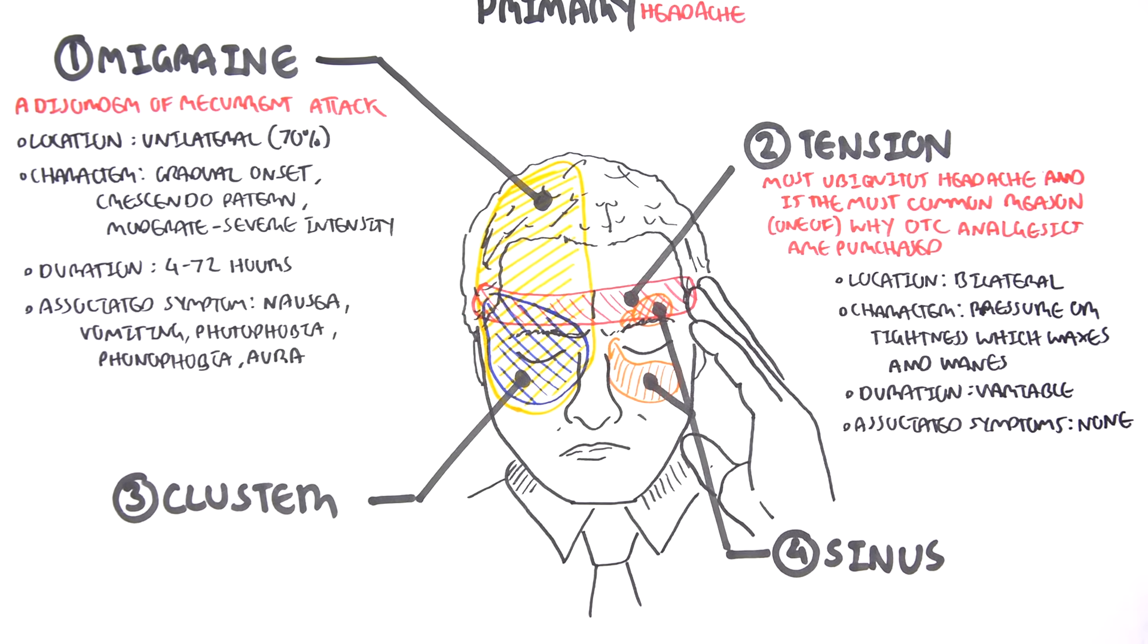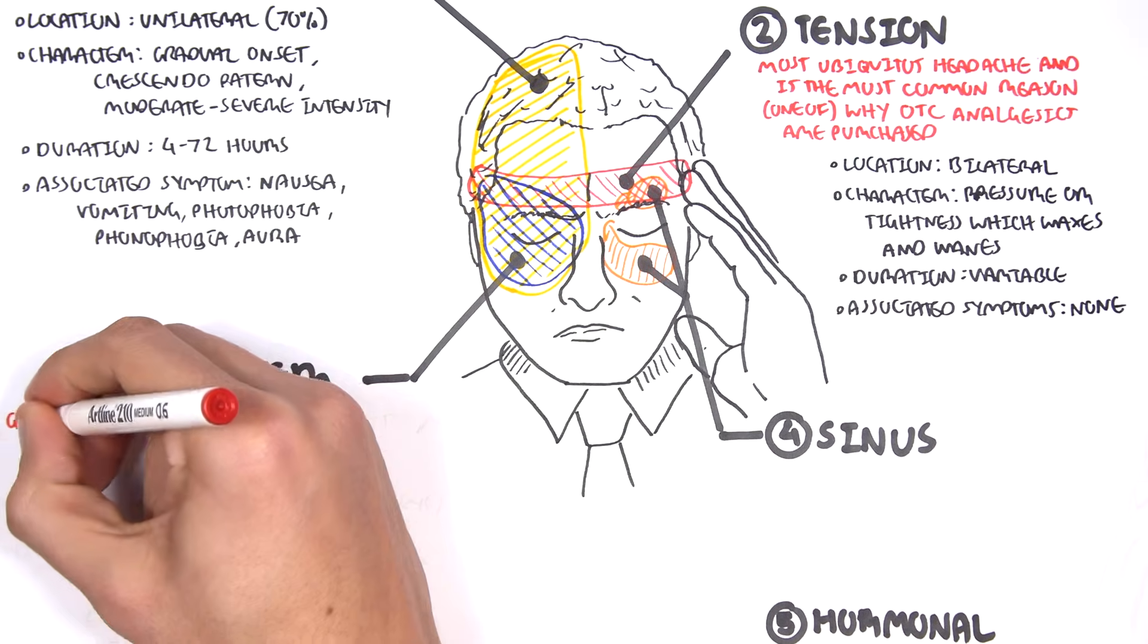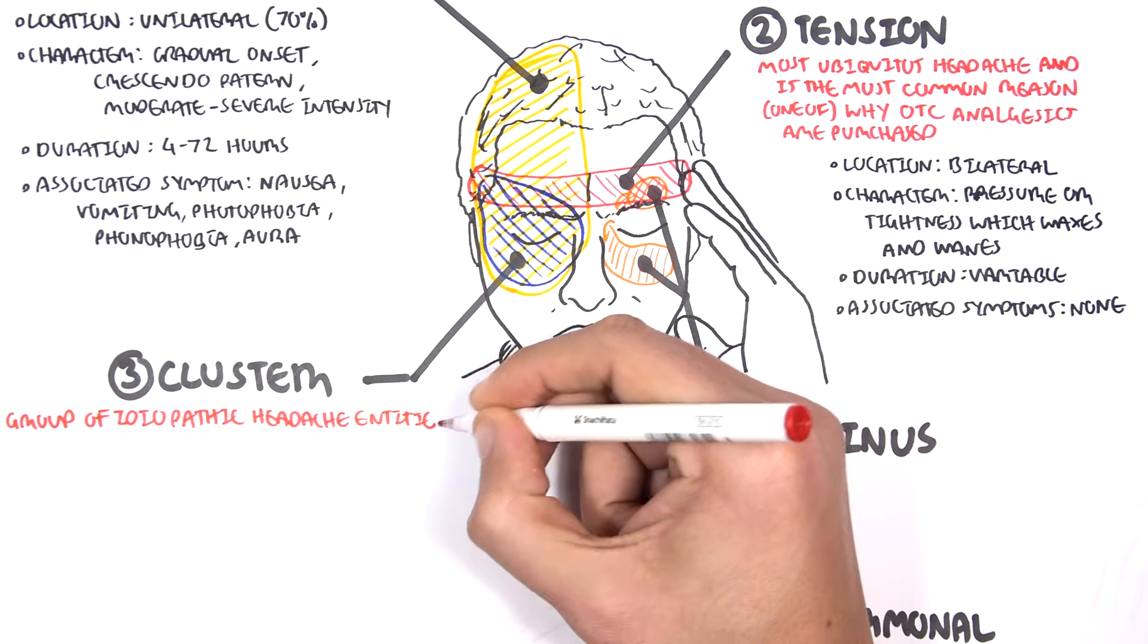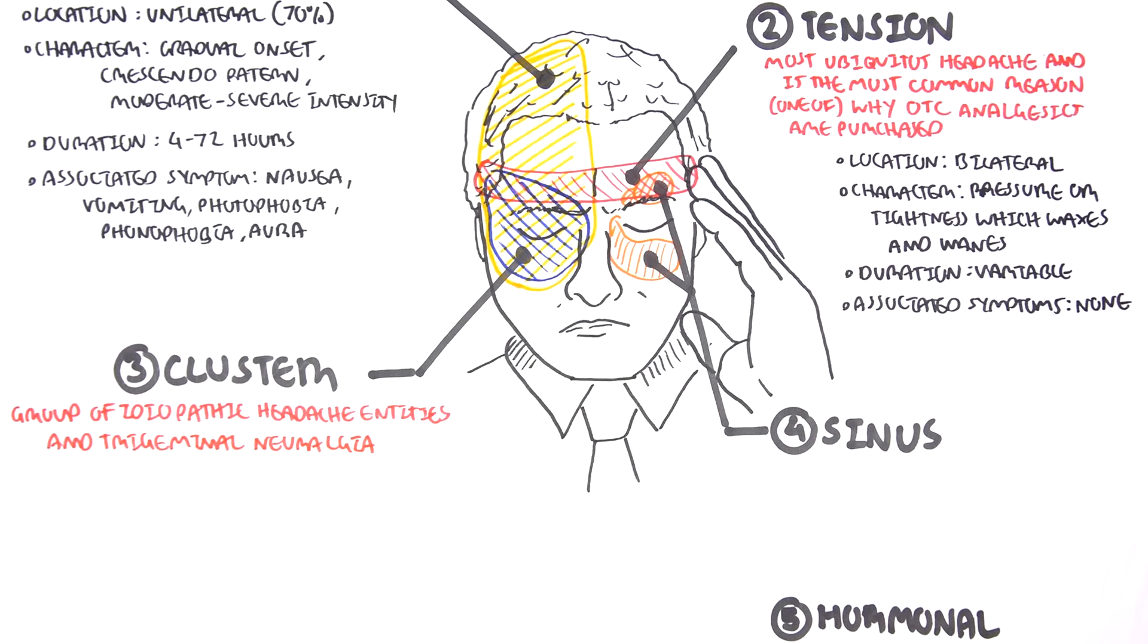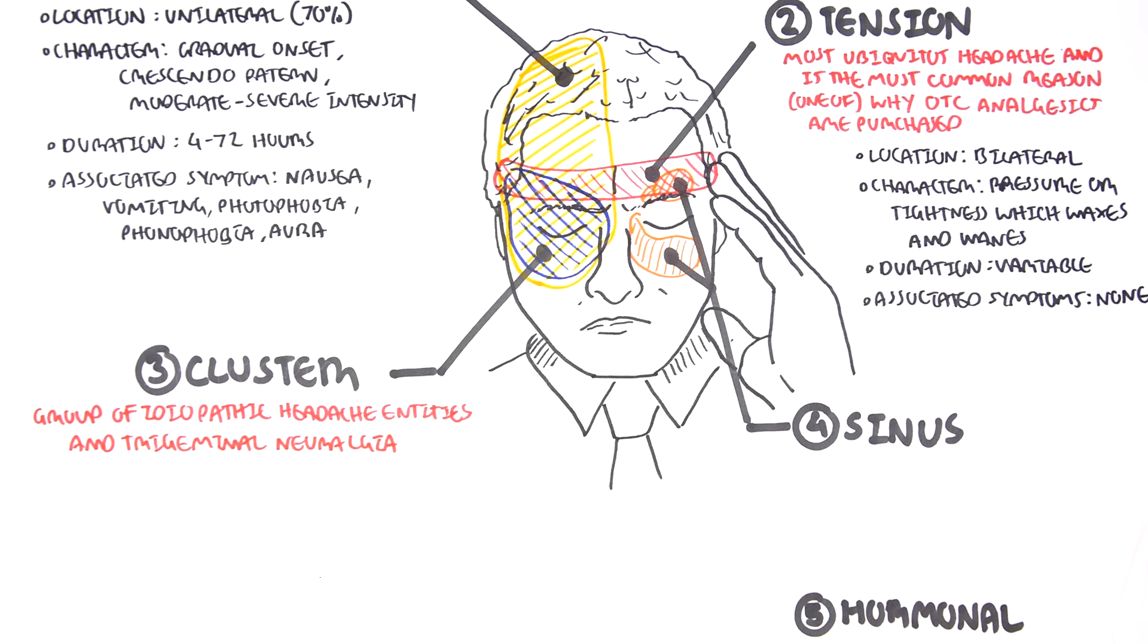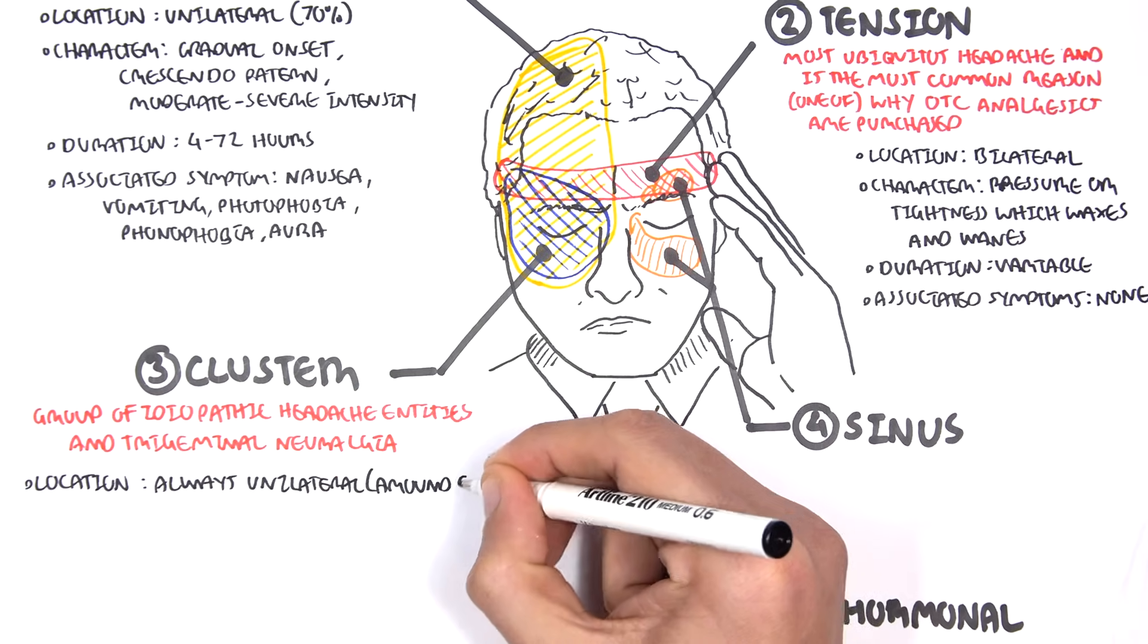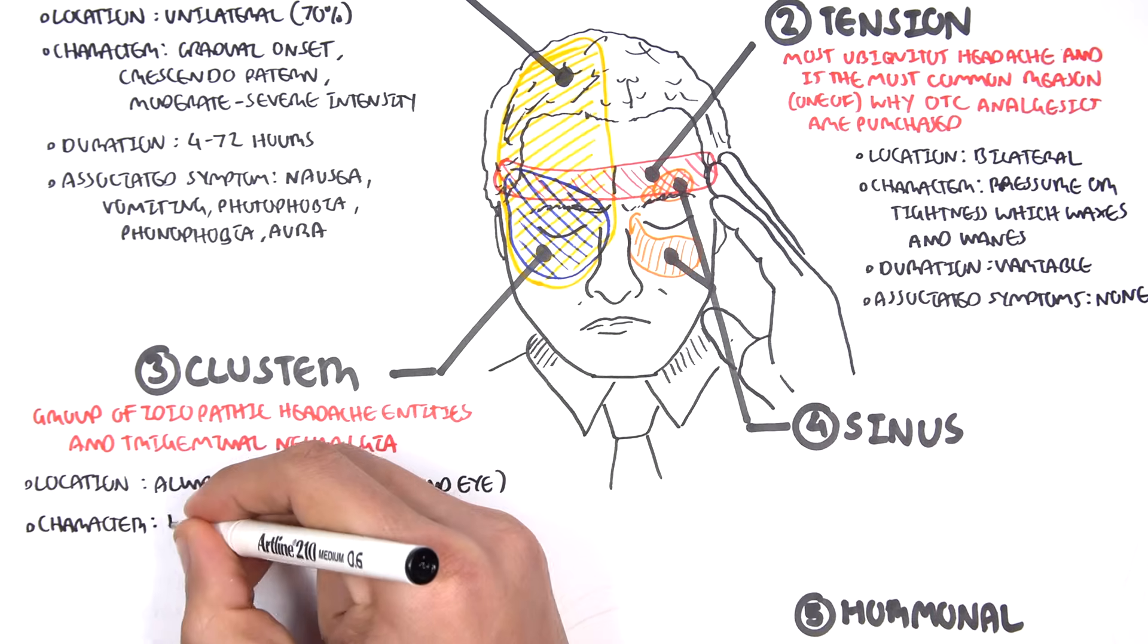Then you have the cluster headache. Cluster headaches are pretty painful. Cluster headaches are a group of idiopathic headaches that are associated also with trigeminal neuralgia. Trigeminal is a nerve, the trigeminal nerve, and it's a very important cranial nerve that does many things around your face. The location of cluster headaches is always unilateral and usually around the eye.